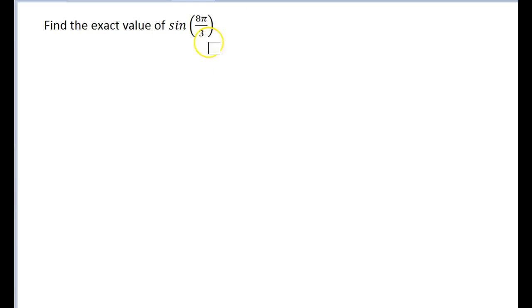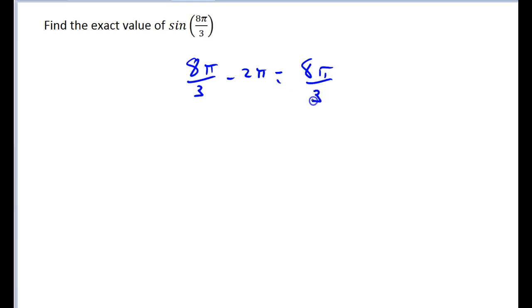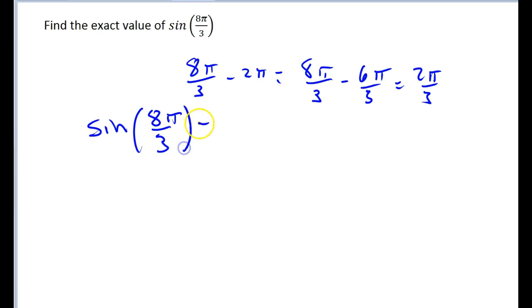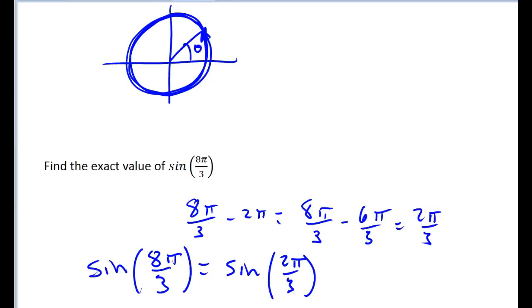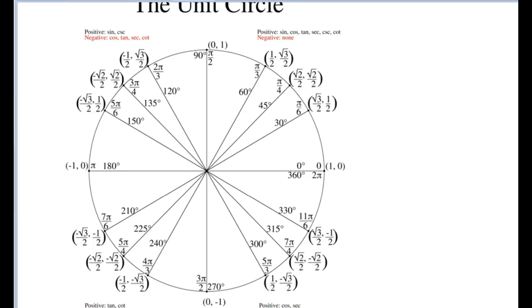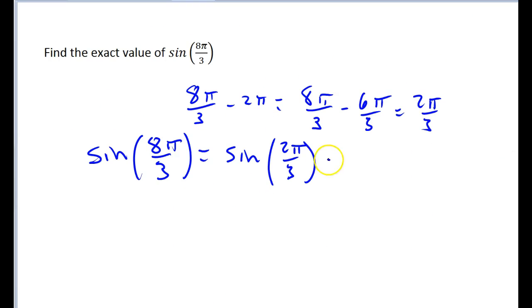Here's an example of how you'd use this periodic feature. Find the exact value of the sine of 8 pi over 3. You'll notice that 8 pi over 3 is more than 2 pi, so I'm going to subtract 2 pi. That means 8 pi over 3 minus 6 pi over 3 gives me 2 pi over 3. Since I subtracted a multiple of 2 pi, the sine of 8 pi over 3 is exactly the same as the sine of 2 pi over 3, which is one of those angles from the unit circle — it's root 3 over 2.